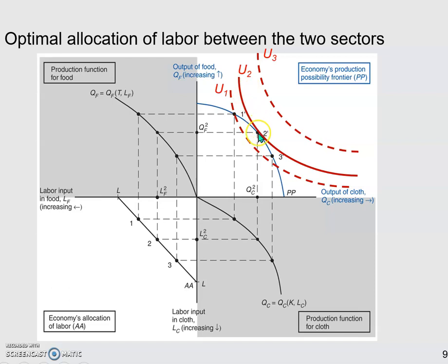Now, graphically here, of course, the tangent point is 2, which is on U2. So, of course, U3 is better. It's higher. It means more satisfaction, but it is not achievable for the given amount of labor, capital, and land.